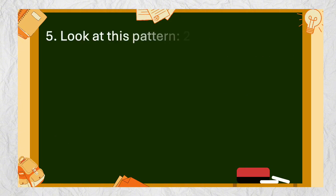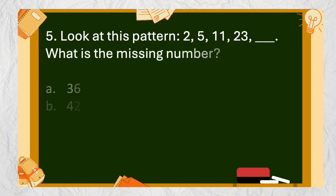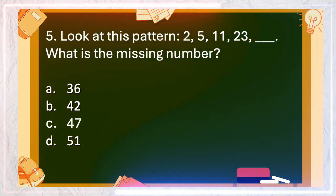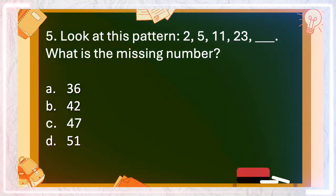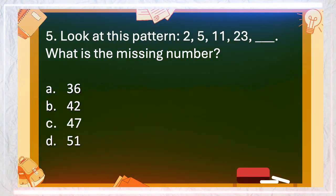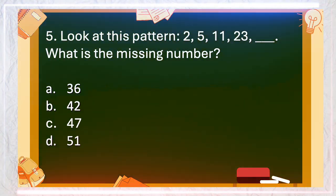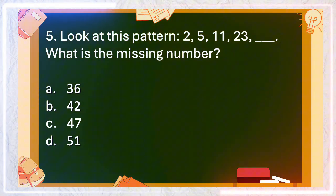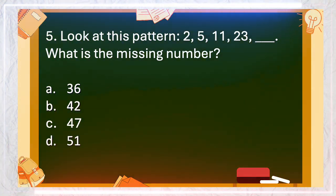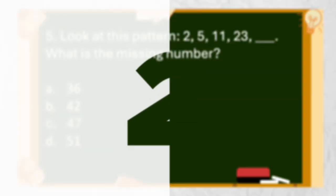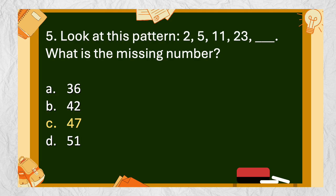Number 5: Look at the pattern below. What is the missing number? A. 36, B. 42, C. 47, D. 51. The answer is C. 47.